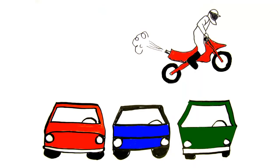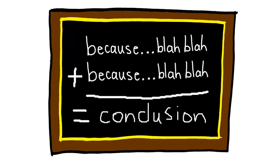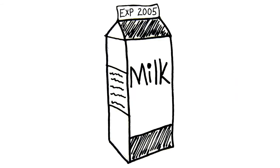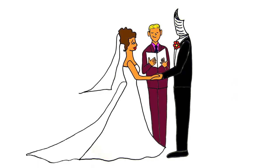Next, jump down to the end of the article and read the discussion and conclusion. These sections sum up the article. Reading the end of a journal article won't spoil it for you.